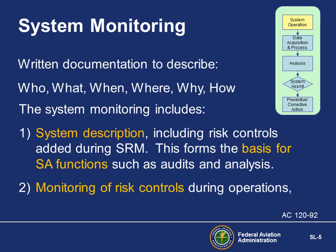Safety Assurance is linked with safety risk management in the requirement to monitor risk controls during operations. Additionally, if through monitoring a systematic problem is identified, SRM should be applied to that process. When risk controls are acceptable, the system is placed into operation and written documentation is in place to describe the system. If risk controls are not acceptable, we need to determine whether to apply corrective action or, if the design is defective, return to the SRM process.